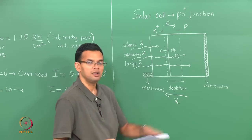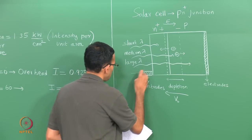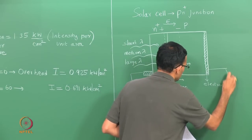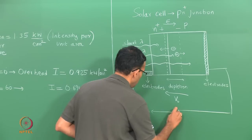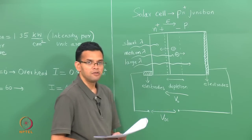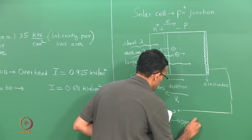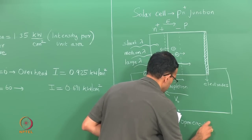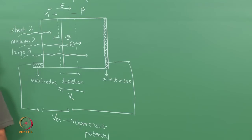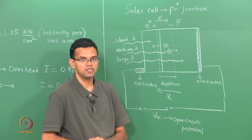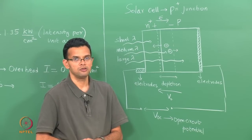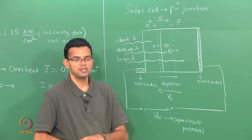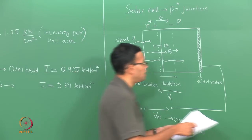This means there is now a potential that develops between the p and n regions. In the absence of any external load, this potential is called V_OC, which is your open-circuit potential. If you now make the connection between p and n so that instead of an open circuit you have a short circuit, you have a current that flows through the device through the outer circuit because of the electron-hole pairs that are generated. This current is called your short-circuit current.